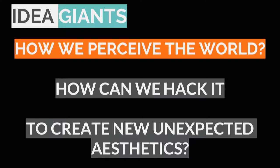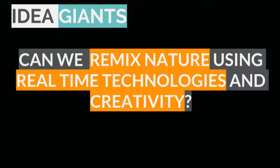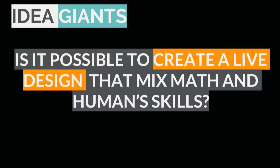A Giant is a three-dimensional shape that we create starting from nature and reality. It started in 2004 when I decided to explore new possibilities in art and technology. The first question was: how do we perceive the world? How can we hack our perception of the world? And in this hacking, is there any aesthetics? To do that, I started remixing nature using real-time technology and creativity.